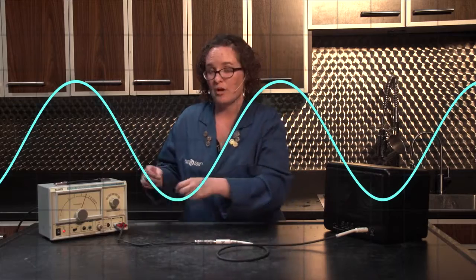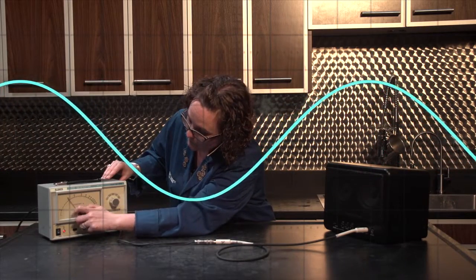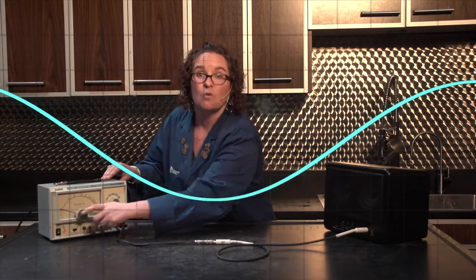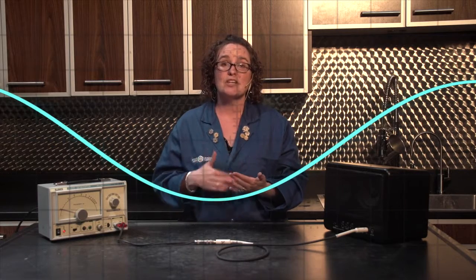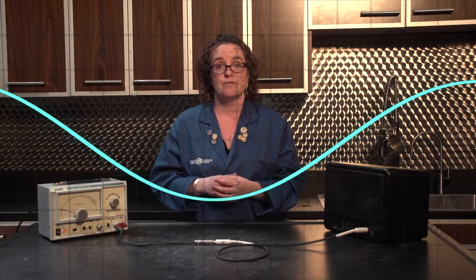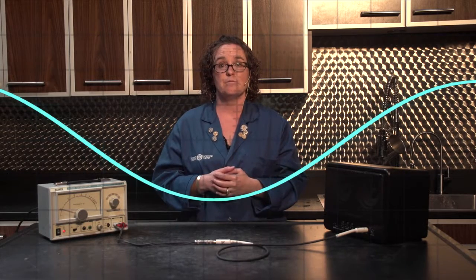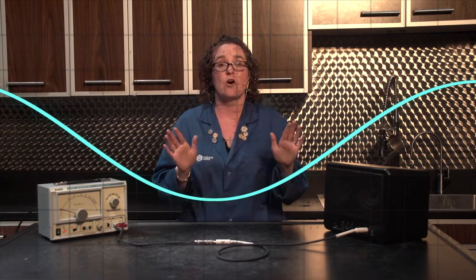If I turn the frequency generator as low as it goes, we can still hear the sound, but sounds can be generated at frequencies much lower that we can't hear. We call this the infrasound range. Some animals, like elephants, are adapted to hearing infrasounds. Elephants use infrasound for communication because it can travel very far distances.